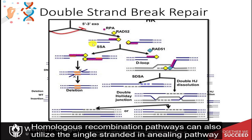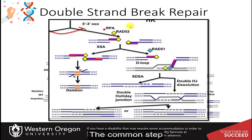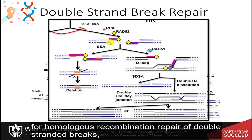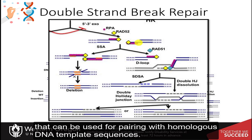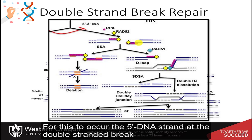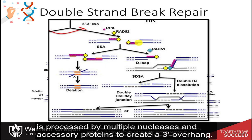Homologous recombination pathways can also utilize the single-stranded annealing, or SSA, pathway shown on the left. The common step for homologous recombination repair of double-strand breaks is the initial formation of single-stranded DNA that can be paired with homologous DNA template sequences. For this to occur, the 5' DNA strand at the double-strand break is processed by multiple nucleases and accessory proteins to create a 3' overhang.